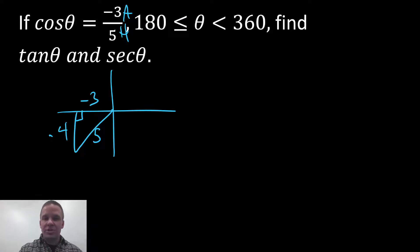So if I want to get my tangent now, tangent of theta, I'm looking at it from this reference right here. Tangent is opposite over adjacent, negative four over negative three, which is four-thirds.